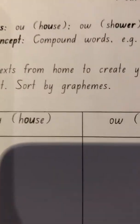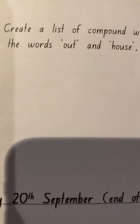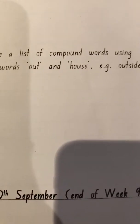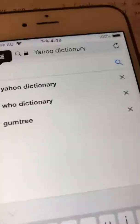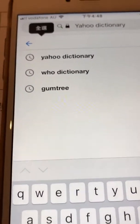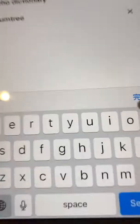This week's homework says: use text from home to create your own list of compound words using the word 'out' and 'house'. So to create a list of compound words — and it says to use your iPad, but I don't have an iPad or a phone. It says the OU sounds, so let's just go.